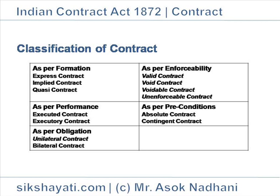Quasi-Contract: it is an obligation created by law regardless of agreement between the parties. Example: A supplies necessities to B, a lunatic. A is entitled to be reimbursed from B's property.